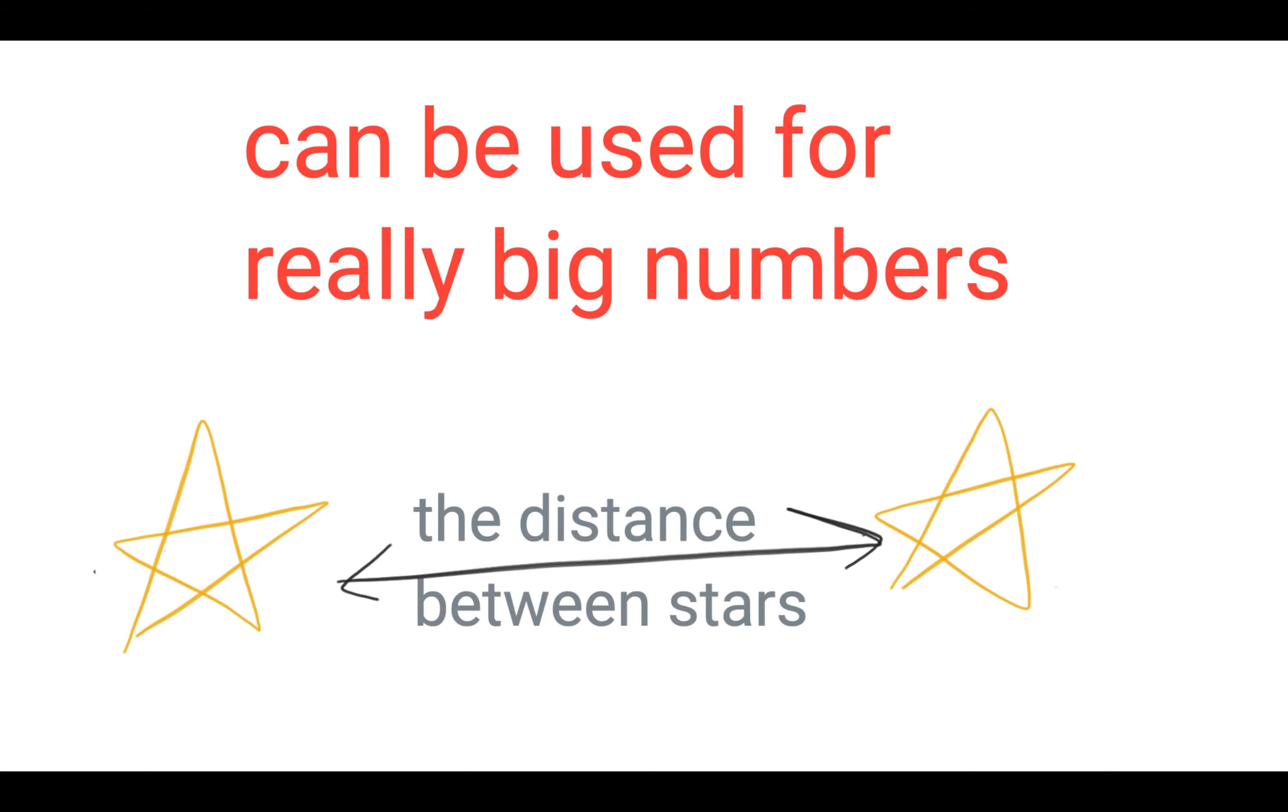So scientific notation in our context may be used in terms of really big numbers like the distance between stars. The sun is the closest star to planet Earth, 92 million miles about.